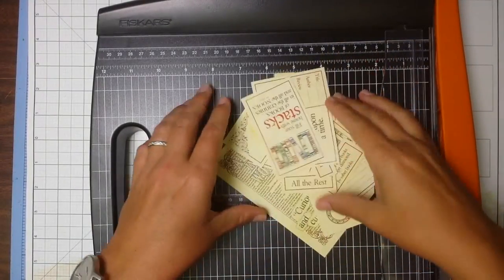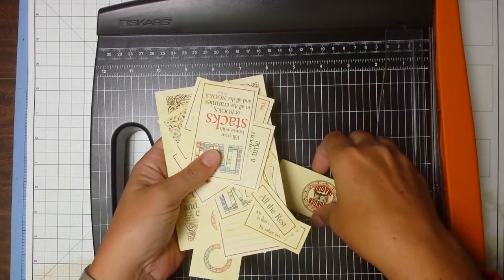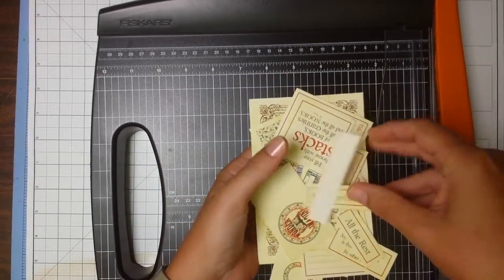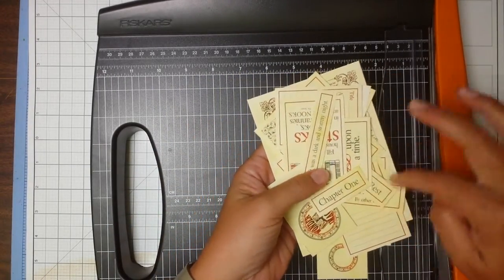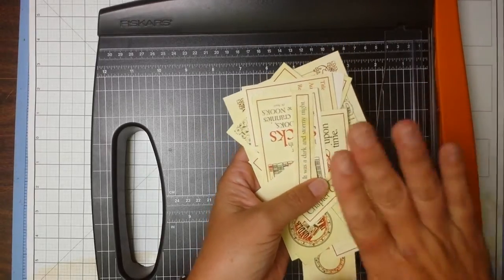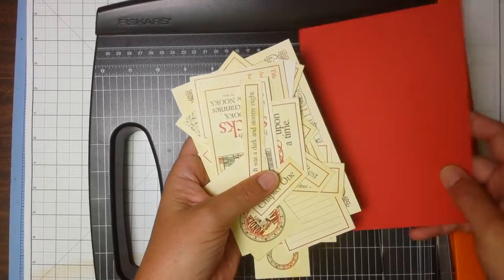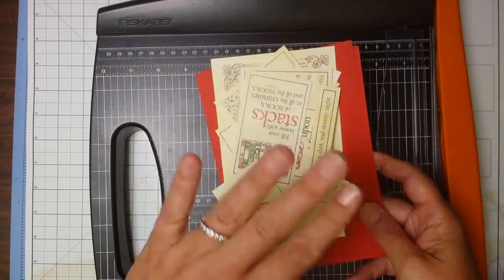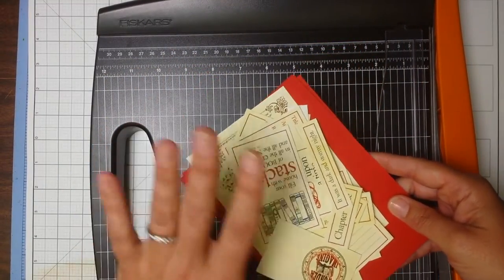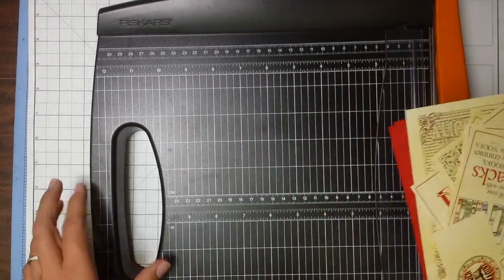Now I have all the little pieces trimmed apart. Later I'll go back with an ink applicator and Club Scrap earth ink to ink the edges. They'll be a great addition to help finish the book. Take your two red covers that you trimmed to six and a half inches and set them aside to prepare the inside pages.